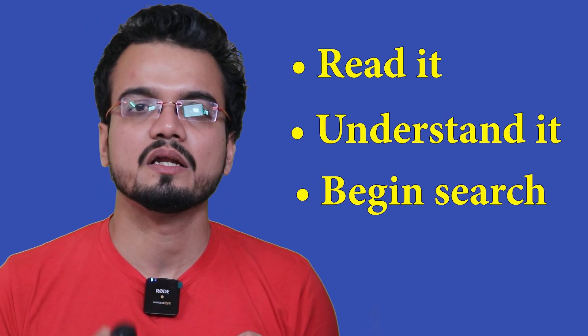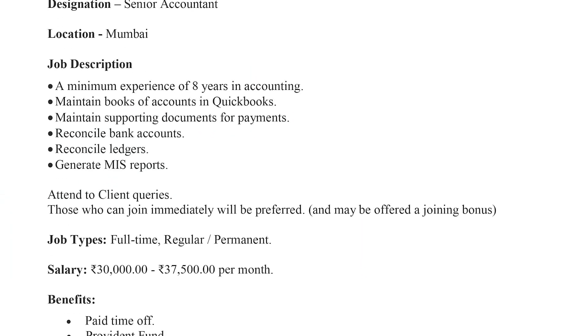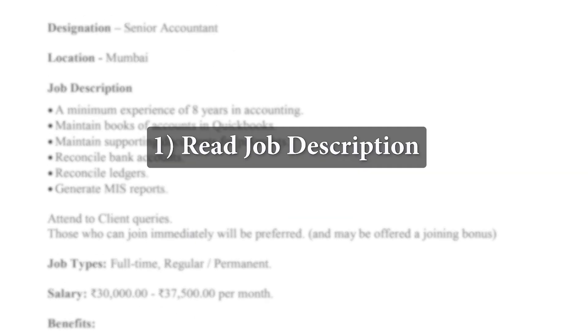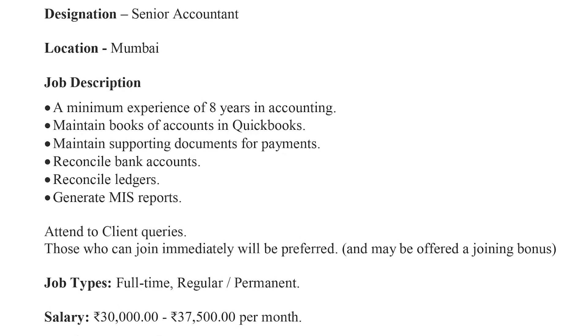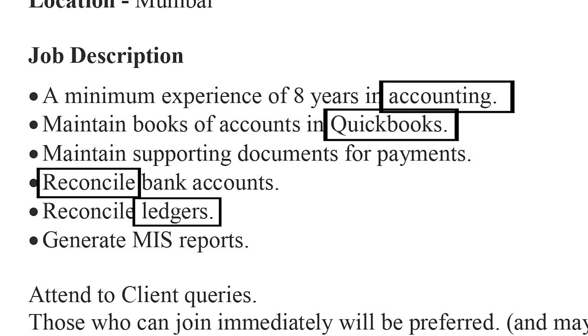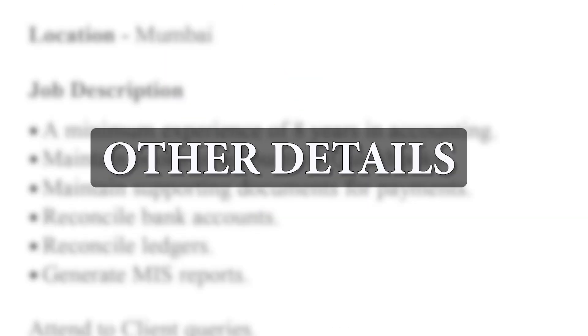While searching, the recruiter will first try to extract the important keywords. These keywords will help find relevant resumes. For example, if I have a job description to search for a senior accountant, my first step will be to read the job description and extract the keywords — accounting, QuickBooks, reconcile, ledger, MIS reports — all of them are keywords. Then I'll use these keywords along with experience, location, and other details to find related resumes.